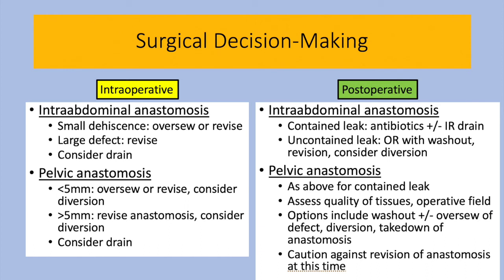A drain may be considered for the same reason as above. For the postoperative leak, if an intra-abdominal leak is noted, a contained leak can typically be treated with antibiotics and image-guided drain placement. If there is a free-flowing or uncontained leak, abdominal exploration should be done. A pelvic anastomotic leak depends on the timing after surgery; the surgeon will need to assess the quality of the tissue and the operative field. Options include washout with or without over-sewing of the defect with diversion, loop diversion alone, or takedown of the anastomosis with end diversion.